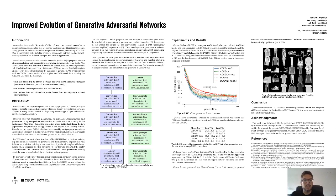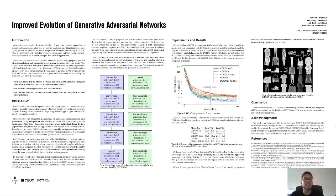In QEGAN version 2, we use the loss functions of RASGAN both in the training and as fitness functions for generators and discriminators. In this way, we avoid the costly computation of the FID score for every individual at each generation used in the first version of QEGAN, making use of the same losses obtained during the GAN training step.